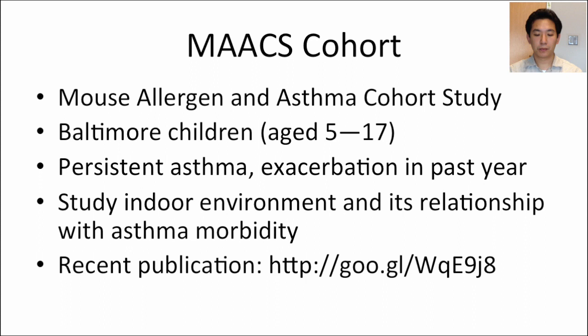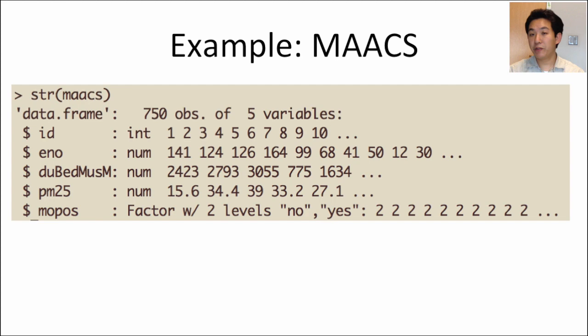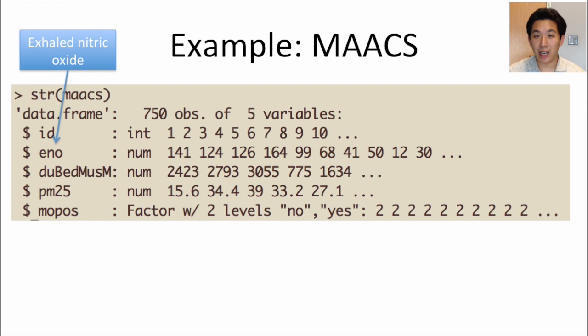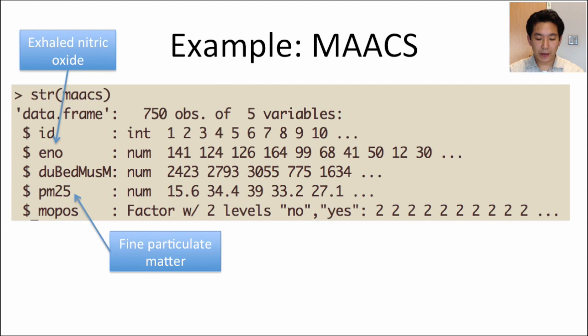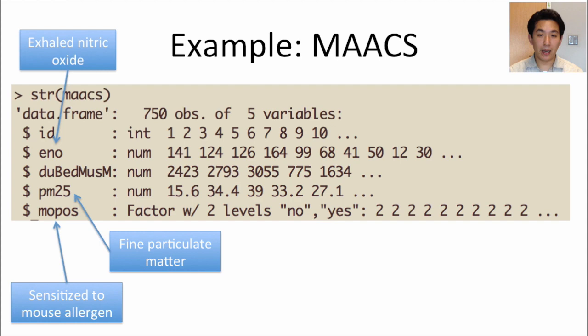The MAACS dataset has 750 observations with five key variables shown here. The ENO variable measures exhaled nitric oxide, which roughly corresponds to the level of pulmonary inflammation — a large value indicates pulmonary inflammation. The PM2.5 variable measures fine particulate matter, which is dust less than 2.5 microns in diameter. The mouse-positive variable comes from a skin test indicating whether the children are allergic to mouse allergen.